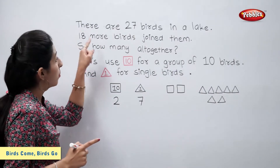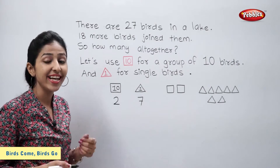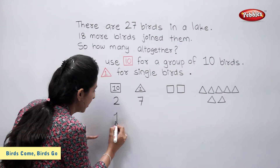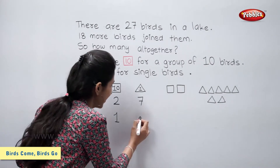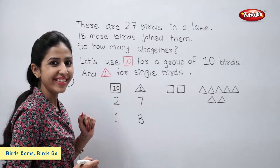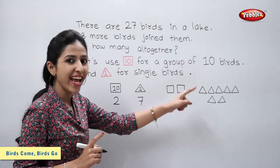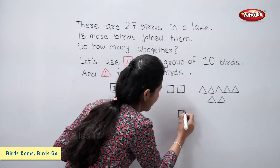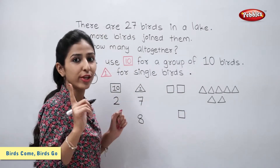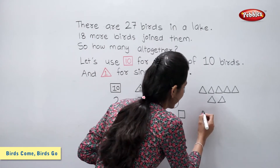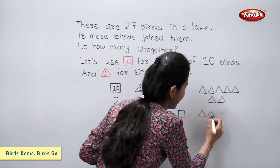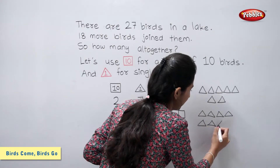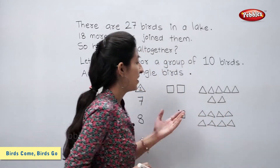Now 18 more birds join them. So let's write 18. 18 means one ten and eight ones. Let's write 18 using squares and triangles: one ten, so one square; eight ones, so eight triangles.